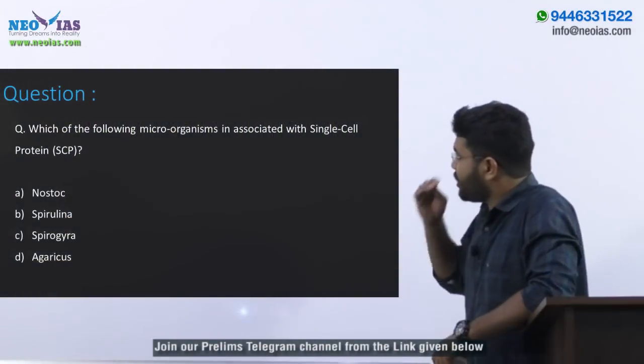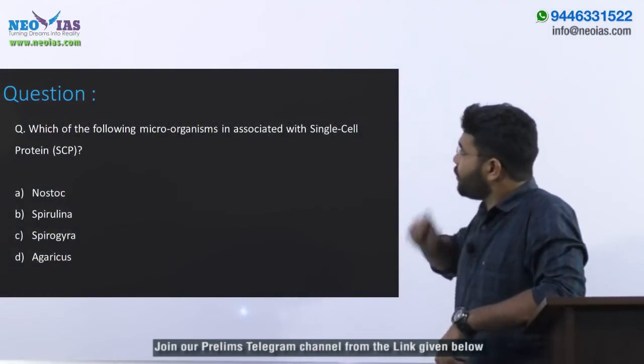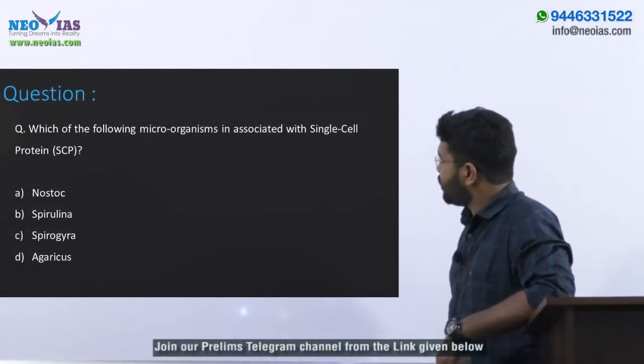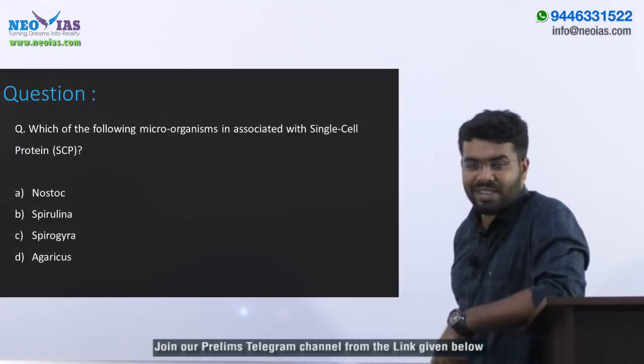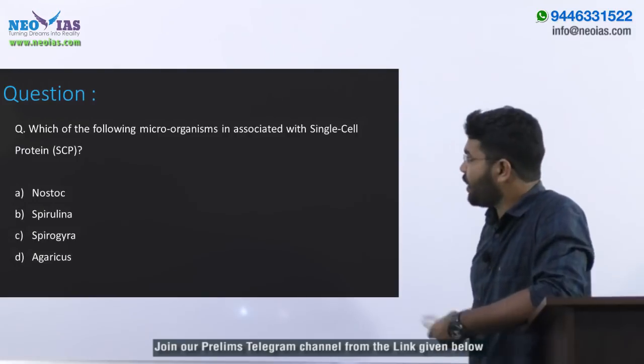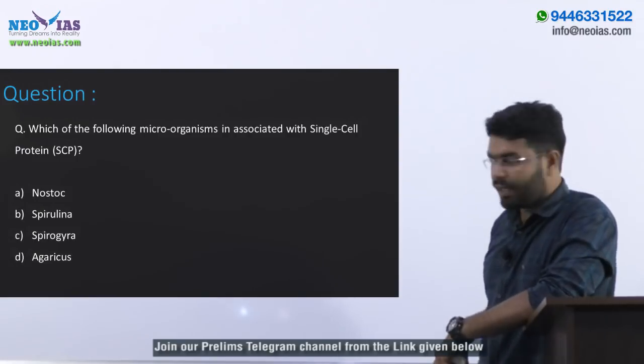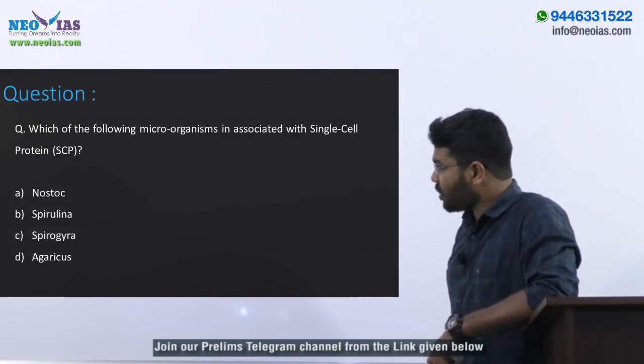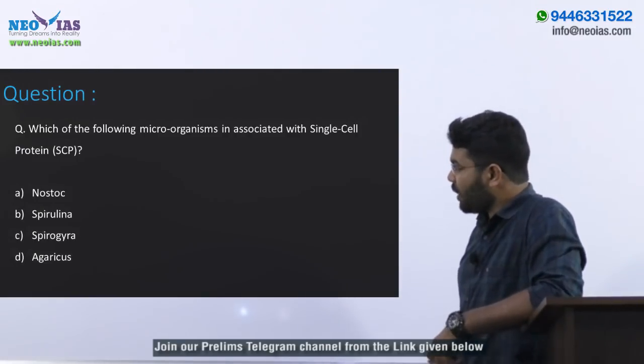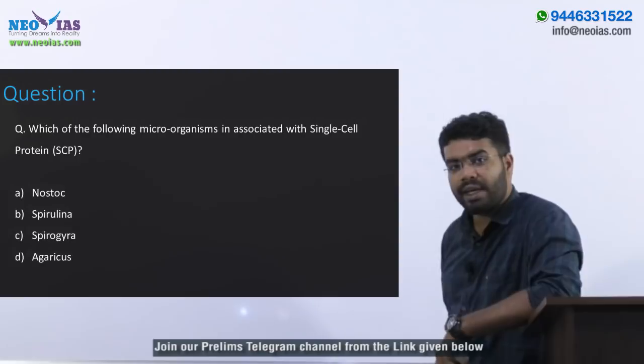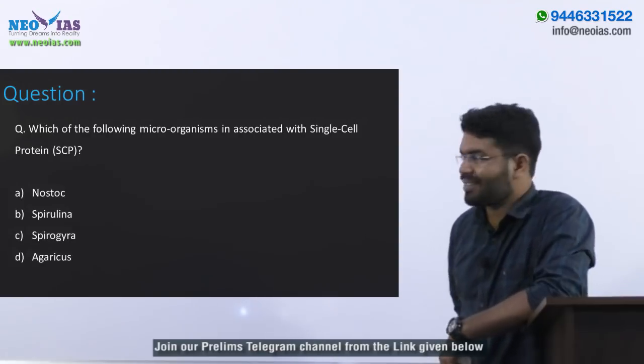Let's have a look at the next question. Which of the following microorganisms is associated with single cell protein (SCP)? The options are: Nostoc, Spirulina, Spirogyra, and Agaricus.